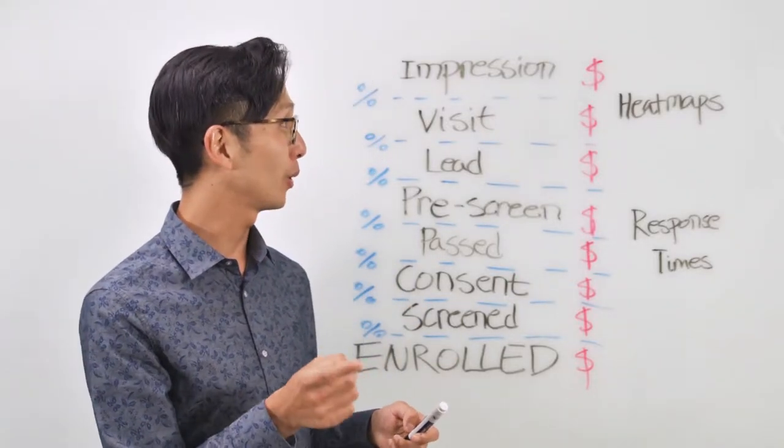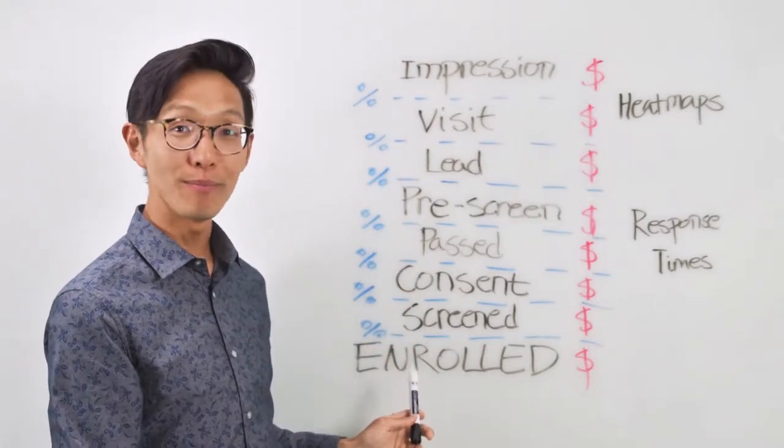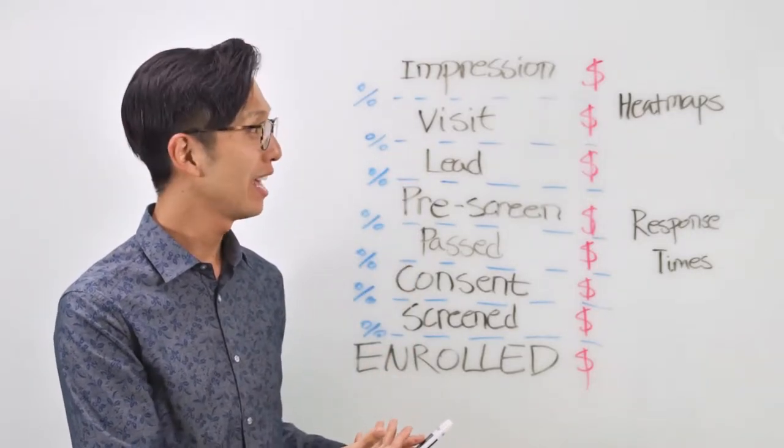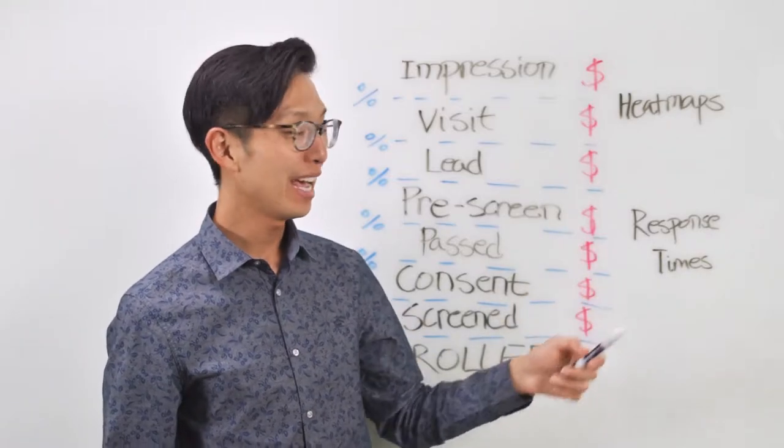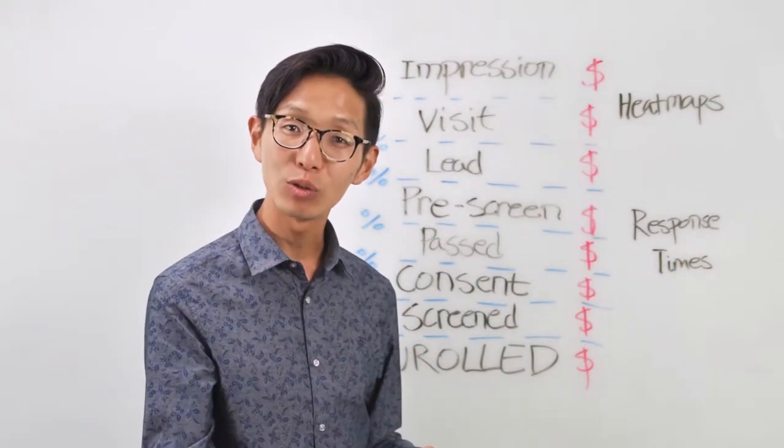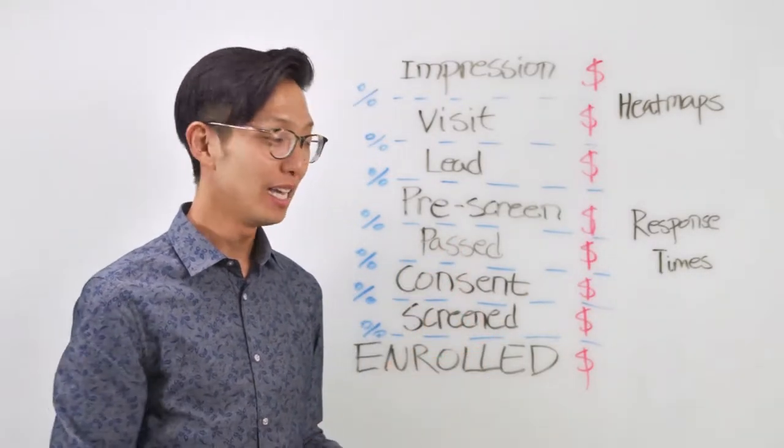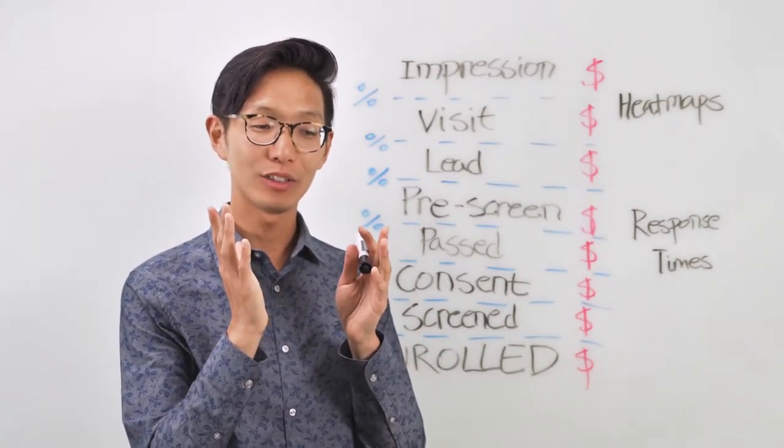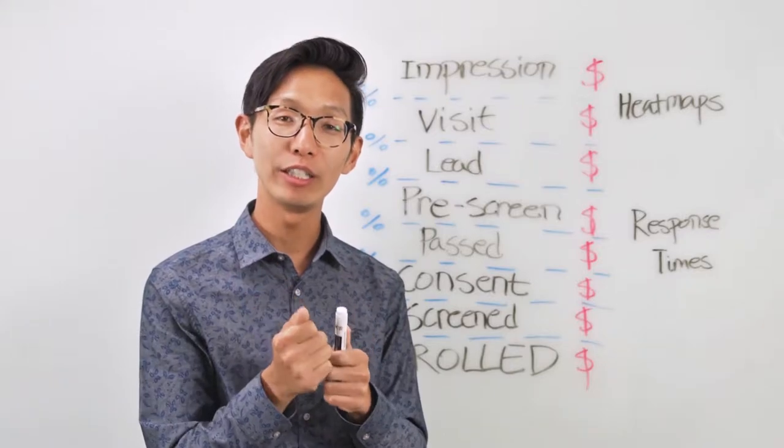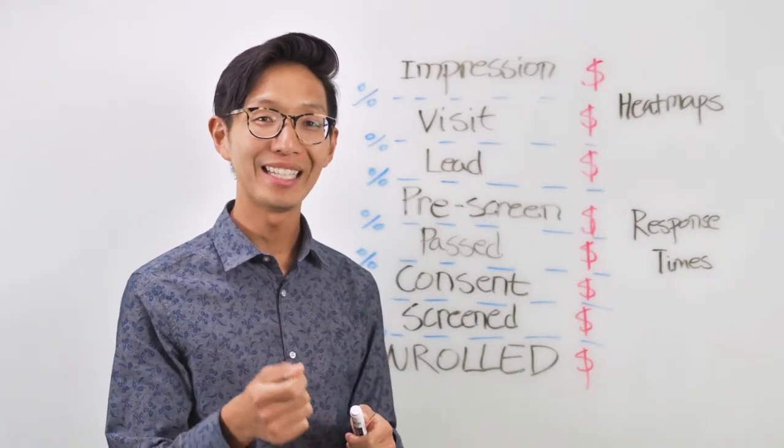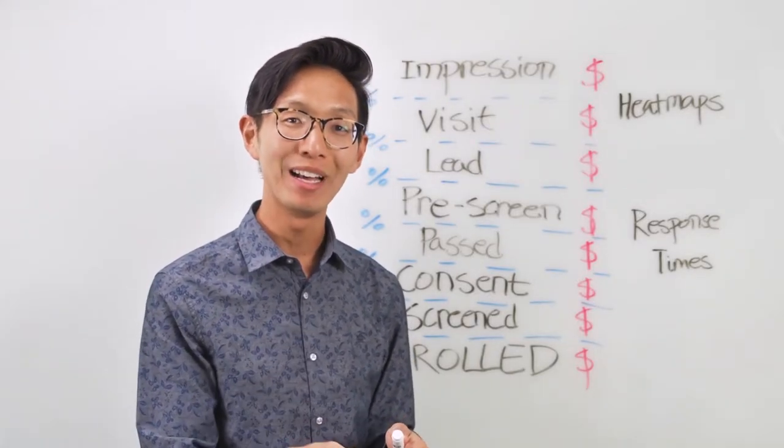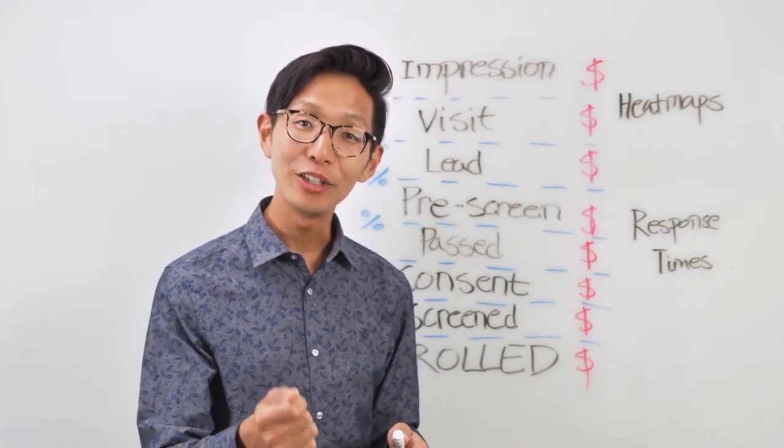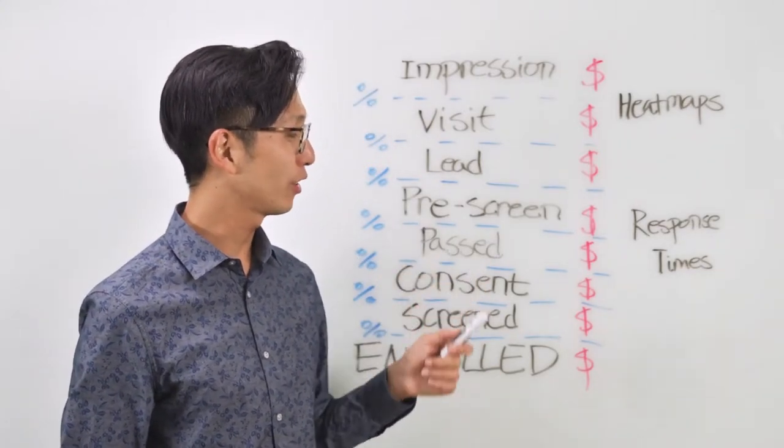Because when you start looking at the secondary companion measure of conversion rates, and when you start looking at heat maps and response times to diagnose what might be happening in your funnel, all that separation of data, all that granularity is only going to yield good things for you down the road. It's going to empower you and your team to make the quick adjustments that you need to make sure that your funnel is optimized.